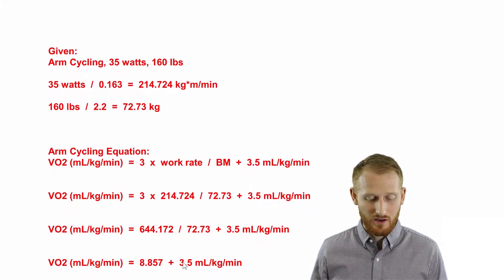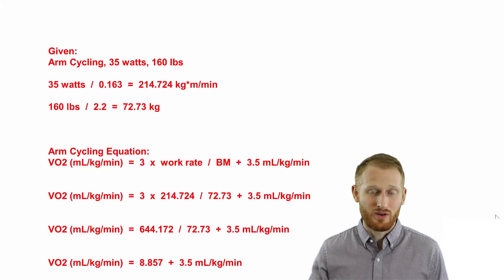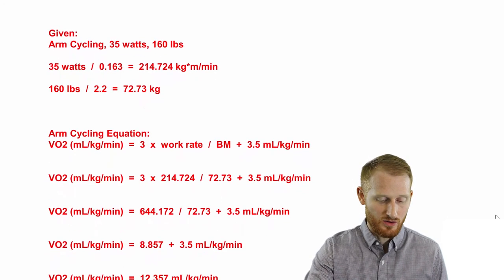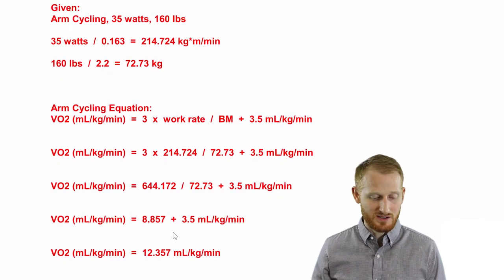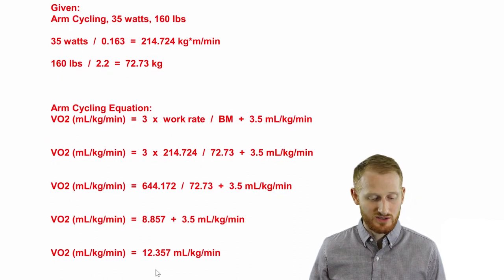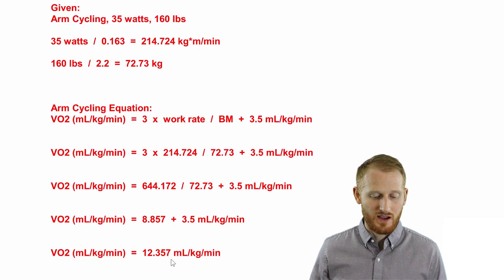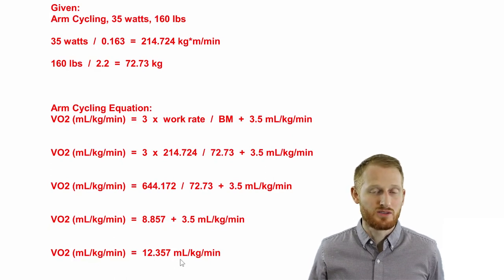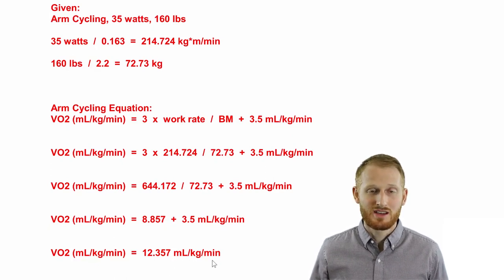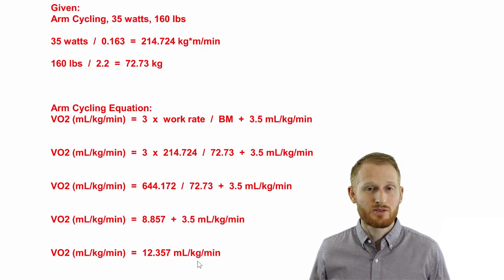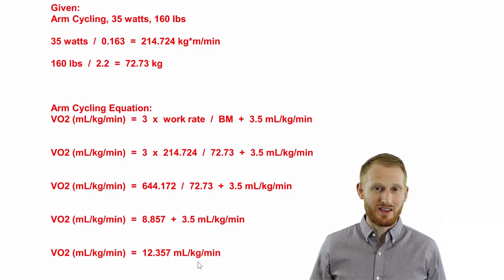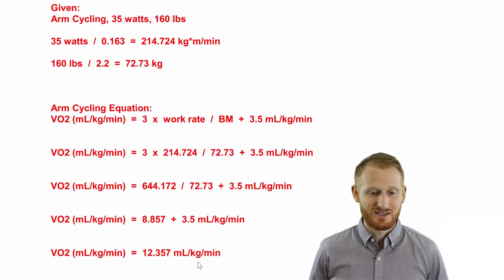and now all we have to do is add back in the 3.5, which again represents the resting component of all of this. So 8.857 plus 3.5 gives us a relative VO2 of 12.357 milliliters of oxygen per kg of body mass per minute. So that's how much oxygen he's burning per kg body mass per minute during the arm cycling that he's doing at that specific intensity.